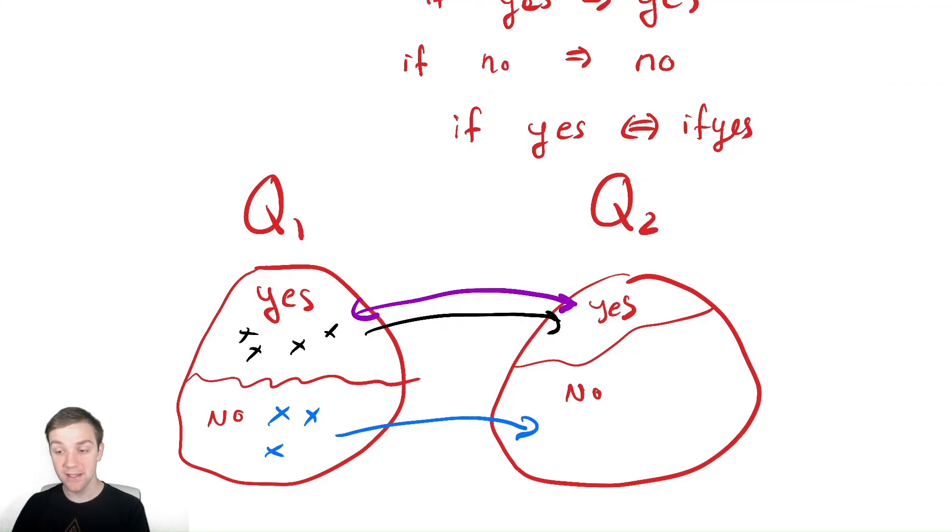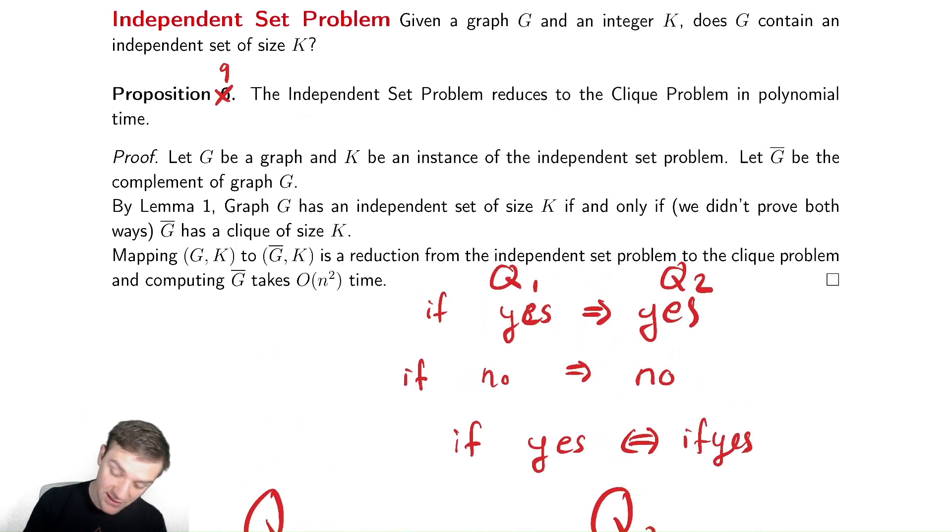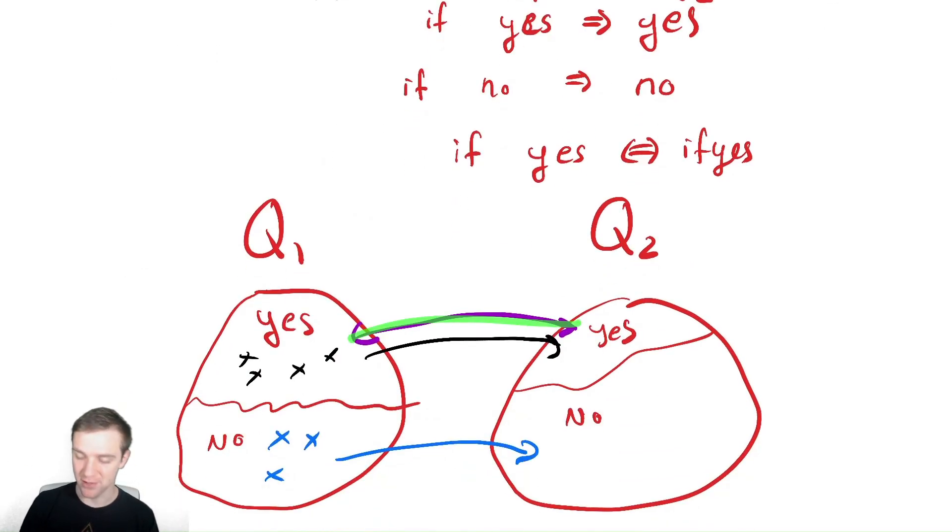Or do what we just did and say it goes to yes if and only if it goes to yes. So if you're proving this, this is why I recommend that you have something like it is an independent set if and only if it is a clique. Because then you can not need to worry about mapping the noes to noes. It's a little bit easier typically to do that. So I recommend doing the purple line here where you say it's yes if and only if it's yes for when you are doing these proofs on your own.